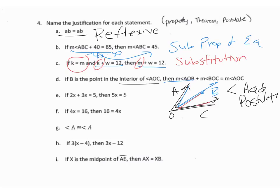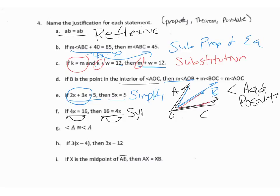If 2x plus 3x equals 5, then 5x equals 5 — we combined like terms, or simplify. If 4x equals 16, then 16 equals 4x — this is when you switch the left-hand side and the right-hand side, so that's symmetric. And if it's the exact same thing on both sides, that's reflexive.